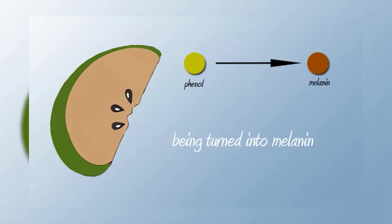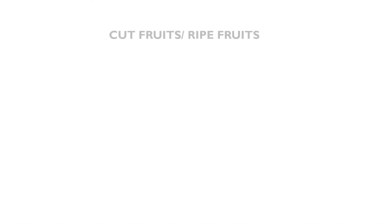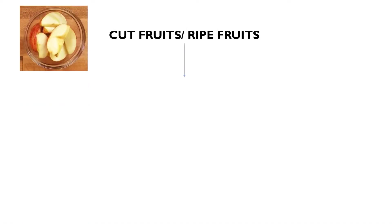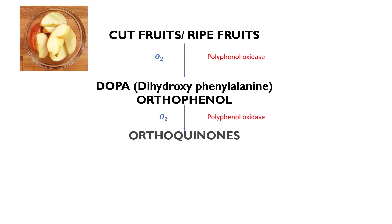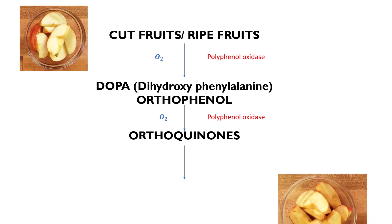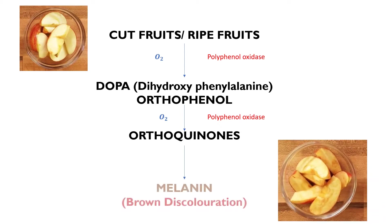The intact enzymes are responsible for ripening, over-ripening, and decay of fruits in the normal course of time. The cut fruits in the presence of oxygen and polyphenol oxidase convert into orthophenol, further into orthoquinones, and finally melanin, which is brown discoloration.